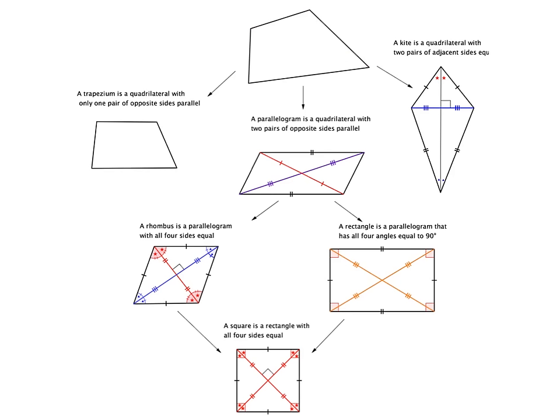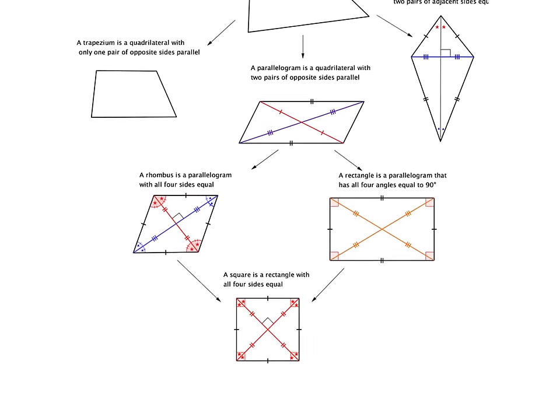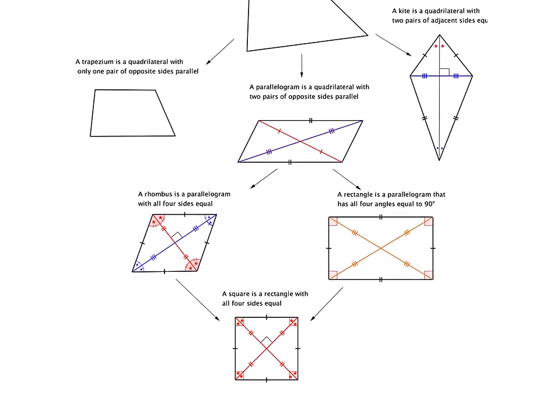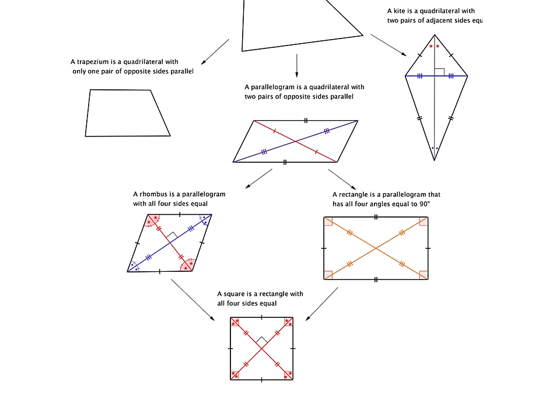The diagonals of a trapezium and a general quadrilateral are not really interesting to us, so we're going to just ignore them. However, the rest all have some very interesting properties, so let's have a look at those.